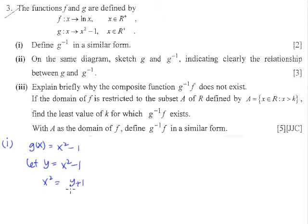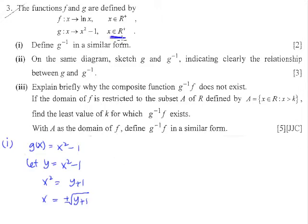There's one thing you have to be extremely careful with: when you square root both sides, you get plus or minus. Now the big question is whether g⁻¹ is going to be the negative or the positive root. What we do is look at the domain of g. Since this is a quadratic equation symmetrical along the y-axis, and we want the positive side of the curve, our g is only the right side, and the inverse of this right side will be the positive root.